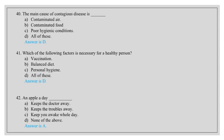The main cause of contagious disease is contaminated air, contaminated food, poor hygienic conditions, all of these. Answer is D, all of these. Which of the following factors is necessary for a healthy person? Vaccination, balanced diet, personal hygiene, all of these. Answer is D, all of these.